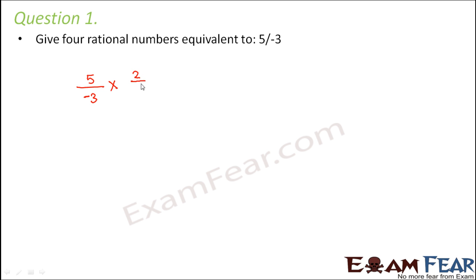For example, if you multiply both the numerator and the denominator by 2, your overall value remains unchanged, but at the same time your new rational number becomes 10 divided by minus 6. So 10 by minus 6 is a rational number which is equivalent to 5 by minus 3.